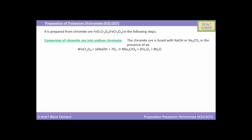Chromite ore when reacted with NaOH and oxygen, the reaction will yield Na₂CrO₄, i.e. sodium chromate, and as a by-product you will get Fe₂O₃, i.e. ferric oxide, and water. Alternatively, FeCr₂O₄ when reacted with Na₂CO₃, sodium carbonate, and oxygen will also yield sodium chromate, but here as a by-product instead of water you will get carbon dioxide gas.